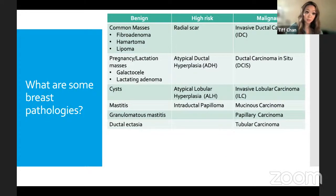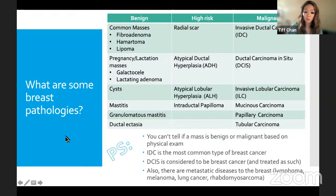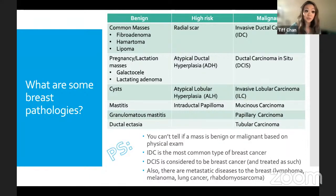You've probably heard of breast cancer and breast cysts, but there's a wide range of breast pathologies we deal with. A key thing everyone should know: you cannot tell if a mass is benign or malignant based on physical exam alone. Whether something is firm, squishy, mobile, or fixed — none of those adjectives reliably determine malignancy. If you feel something, the first step is imaging at a radiology center.